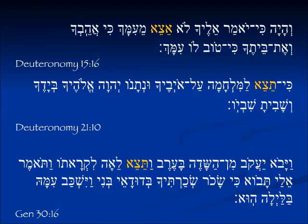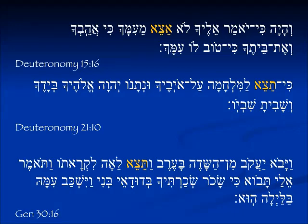In Deuteronomy 21:10, 'Ki tetzeh lemilchama' — when you go out to war. How do we know it's not 'she goes out to war'? Because she doesn't go out to war — only he does — and it is followed by 'al oivecha,' masculine singular, 'your enemy.' In Genesis 30:16, we have a Tetzeh which is 'she' — 'V'tetzeh Le'ah' — she is coming out in the story of the mandrakes, coming out to intercept Jacob on his way home from work.